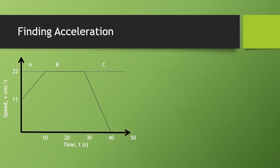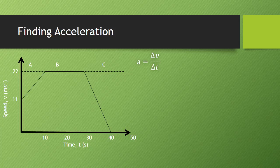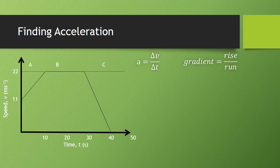Here is a speed time graph, and we're going to try and find the accelerations of part A, B and C. We're going to use our acceleration equation that says the acceleration is equal to the change in speed over the change in time. Similar to the previous video, we're going to use our gradient formula as well.